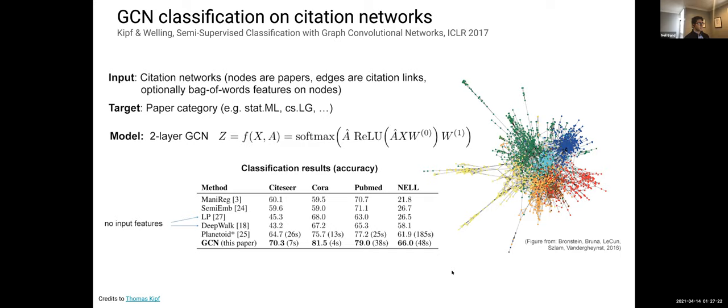For GCN tasks, we looked at citation networks where nodes are papers, edges are citation links, and optionally we have bag-of-words features on nodes. The aim is to predict the category of each paper. We apply a two-layer GCN: input features with a weight matrix and normalized adjacency matrix, apply a non-linearity, repeat with a second weight matrix projecting to output dimensions equal to the number of paper categories, then apply softmax to get predictions.